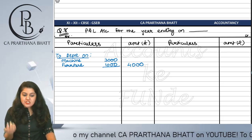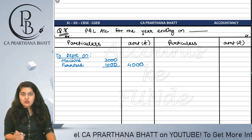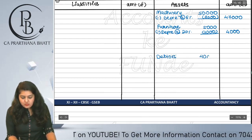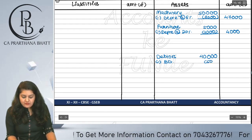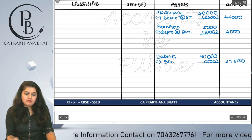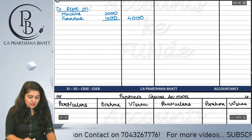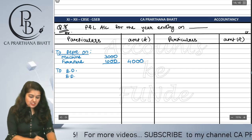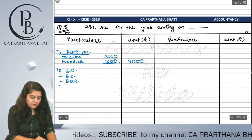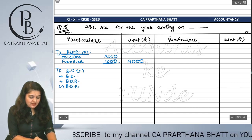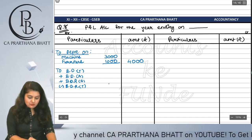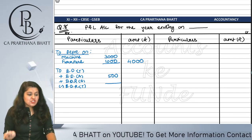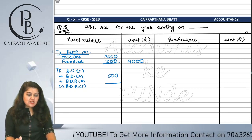Next adjustment: write off bad debts of Rs. 500 from debtors. Debtors are 40,000, so 40,000 minus 500 = 39,500. In the P&L account we write bad debt. The bad debt reserve is not separately given, so we note the adjustment of 500 in the format with plus/minus columns for BDR, trial balance, and adjustment effects.